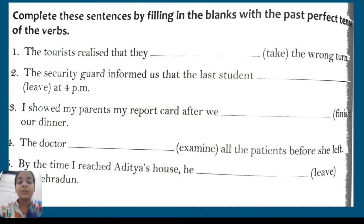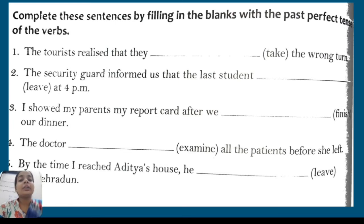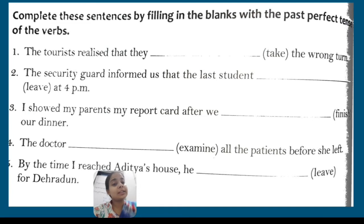The first activity is to complete these sentences by filling the blanks with the past participle tense of the verb. This will help you recall the structure used in past perfect tense. Sentences: 'The tourist realized that they ___ take the wrong turn.' 'The security guard informed us that the last student ___ leave at 4 pm.' 'I showed my parents my report card after we ___ finish our dinner.' 'The doctor ___ examined all the patients before she left.' 'By the time I reached Adit's house, he ___ leave for Dehradun.' Now let's check the answers.